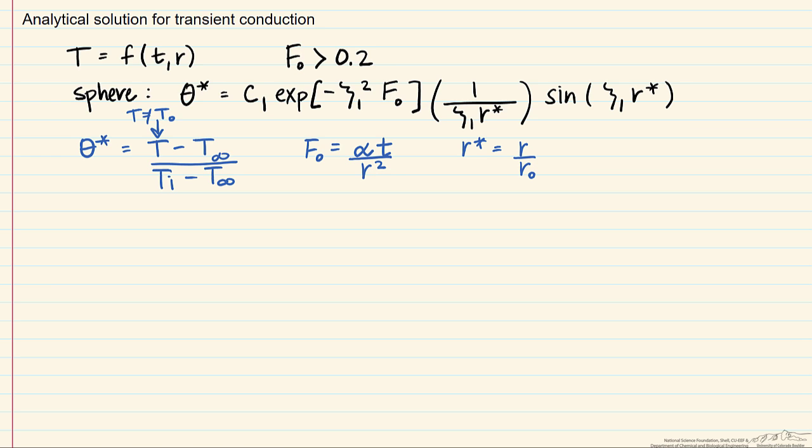The constants, which are C1, as well as this eigenvalue 1, are found in appropriate tables, and they are based on this Biot number. If you recall, that's the convective heat transfer coefficient times the radius of our sphere divided by our thermal conductivity of the solid.